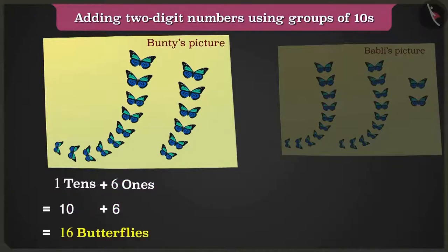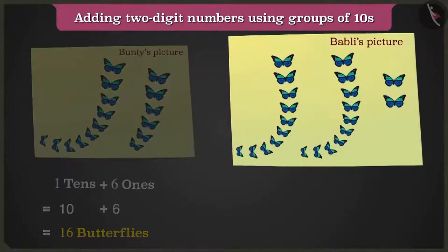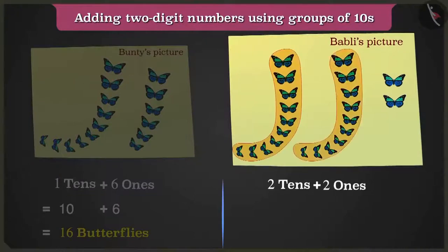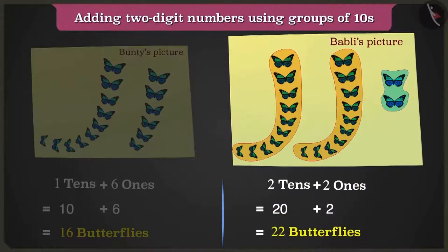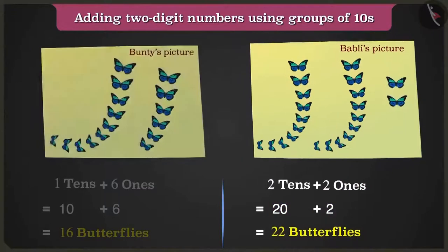And Bubbly's drawing paper has two groups of tens that are twenty and two ones that are two. So twenty plus two are twenty-two butterflies. So how many total butterflies are here? Let's count them.